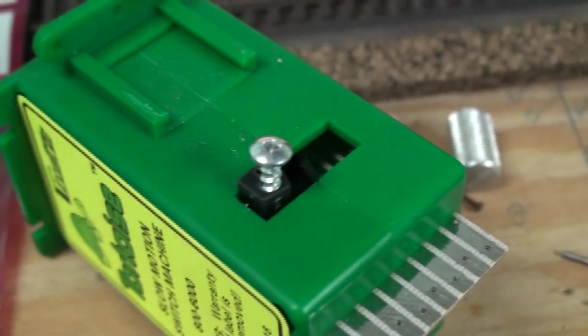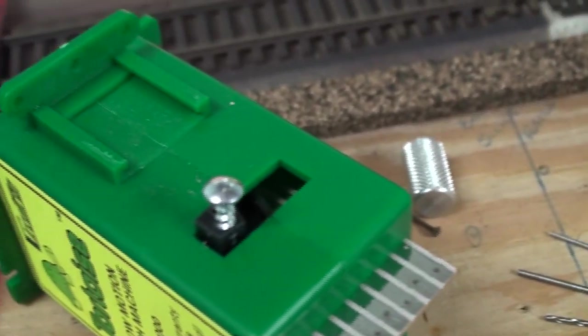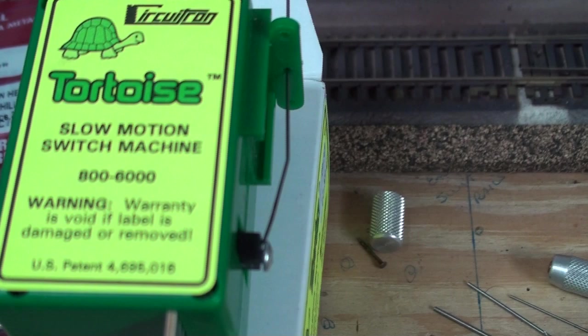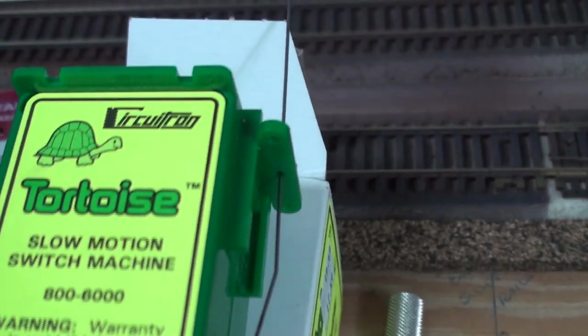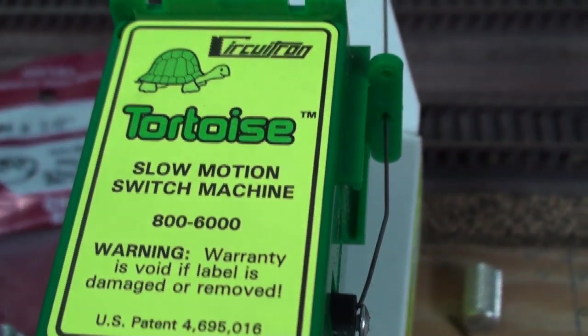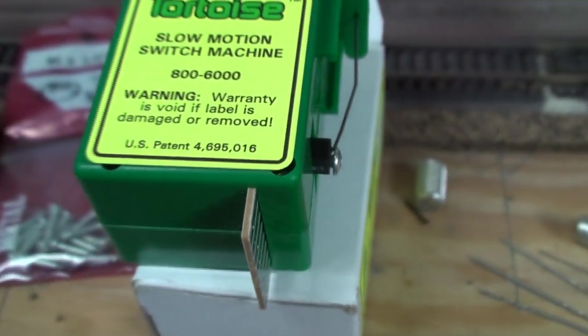I also started to thread the screw that is going to hold the wire in place. And there you have the wire already in place with the fulcrum. The wire obviously is long because I will cut it once I mount the switch machine onto the layout.